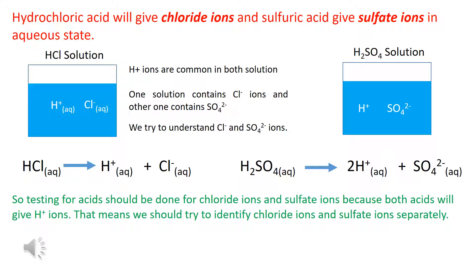Testing for acids should be done for chloride ions and sulfate ions, because both acids will give H⁺ ions. That means we should try to identify chloride ions and sulfate ions separately.